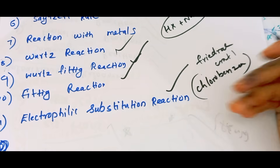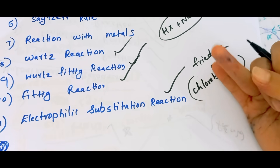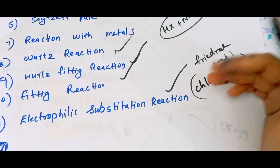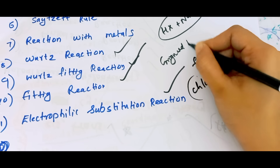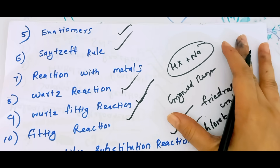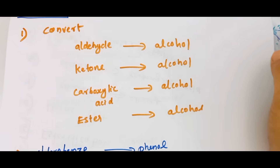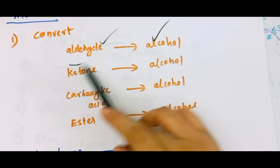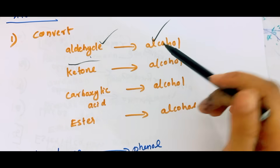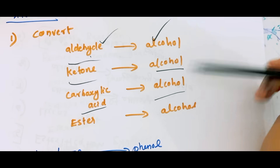What is the reaction? Nitration? Halogenation? Grignard reagent. How to convert aldehyde to alcohol? Methanol, ketone to alcohol, carboxylic acid to alcohol, ester to alcohol — conversions.